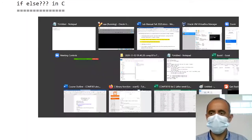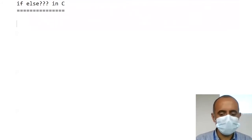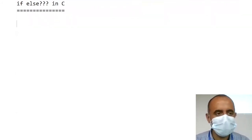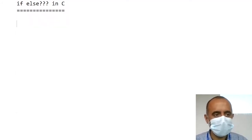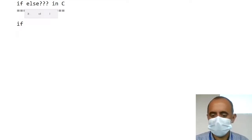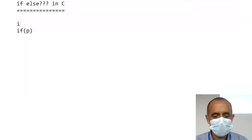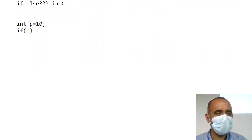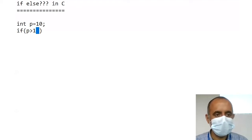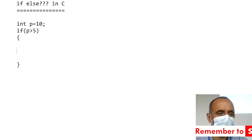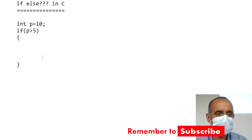First we will see how to use this. For example, if there is a variable p and you have defined p equal to 10, if p is greater than 5, you will execute whatever you write here. So for example, I will write printf to display the value of p.